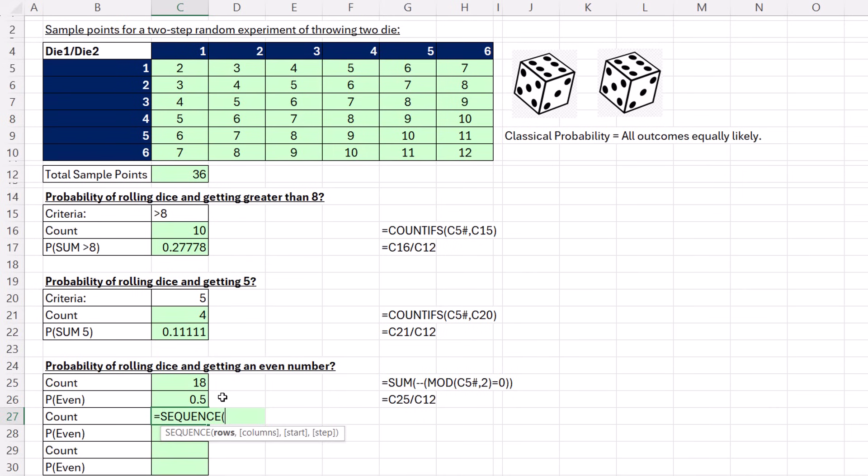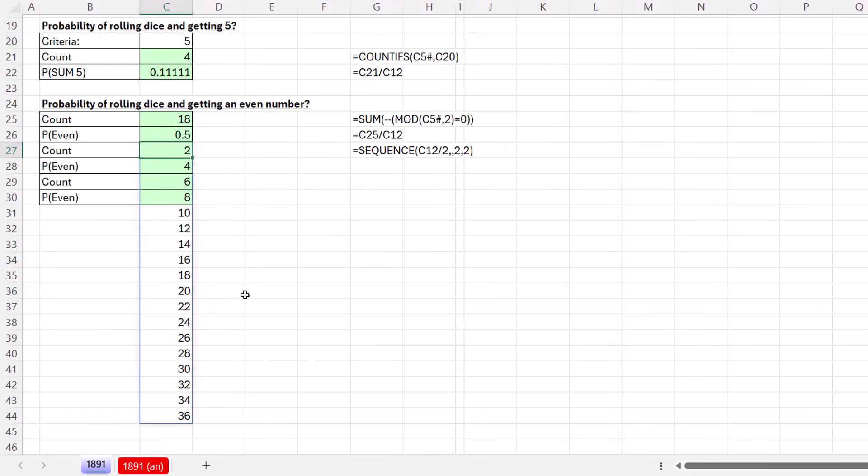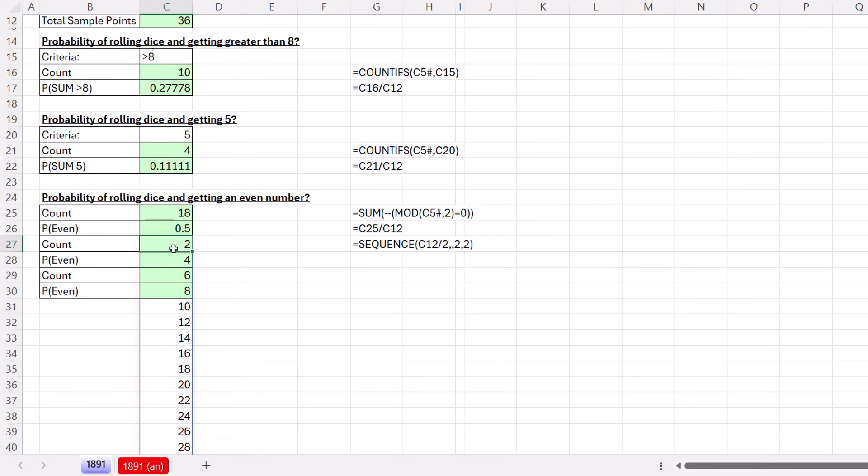Now I've got to show you a clever solution that a student did in the past. This student said I'm just going to list the even numbers. Rows, thirty-six divided by two, comma, comma. Instead of starting at the default one, let's start at two, comma. And instead of using the increment one, this student said, hey, I'm going by two. Control Enter. And there it is. That's all of the even numbers.